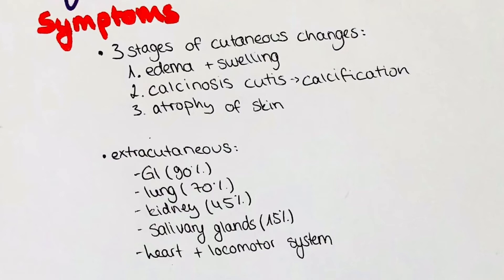45% of patients have kidney-related symptoms, which are usually kidney infarction or insufficiency and arterial hypertension. Other systems affected are the locomotor system, where patients experience arthralgia or arthritis, symmetric synovitis and tendon vaginitis. Also the salivary glands can be affected, which is a cause of secondary Sjögren's syndrome.